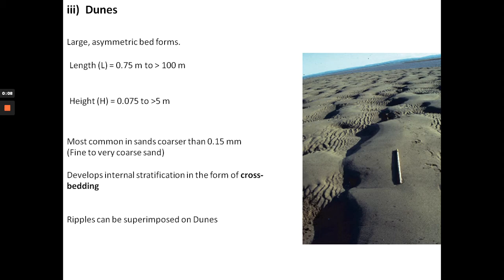We're still on lecture number seven, SIG2004, Classic Sedimentology, and still on the topic of bedforms. In part two, we've looked at two bedforms: lower plane beds followed by ripples, which are bedforms that develop at lower velocities. Now let's look at a third type of bedform — dunes — which develop at relatively higher velocities compared to ripples.